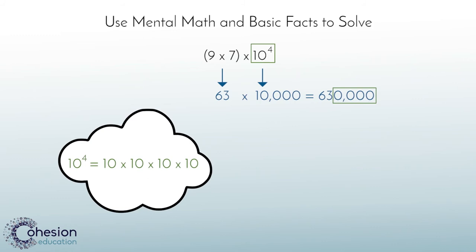It can be helpful for students to notice that our answer, 630,000, has four zeros added onto the end of the basic fact 63, and the exponent we multiplied by is the fourth power of 10.